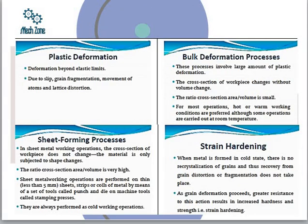Plastic deformation is deformation beyond the elastic limit. What happens during plastic deformation: slipping, grain fragmentation, and movement of atoms causing lattice distortion. The atomic planes change their orientation. Grain fragmentation means the grains will break.